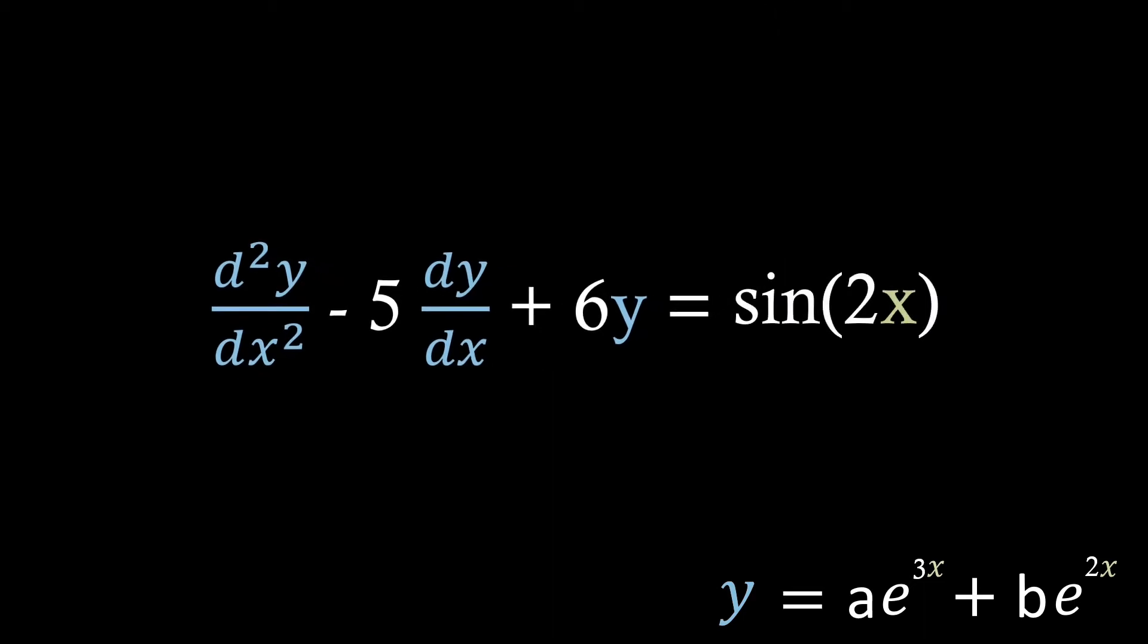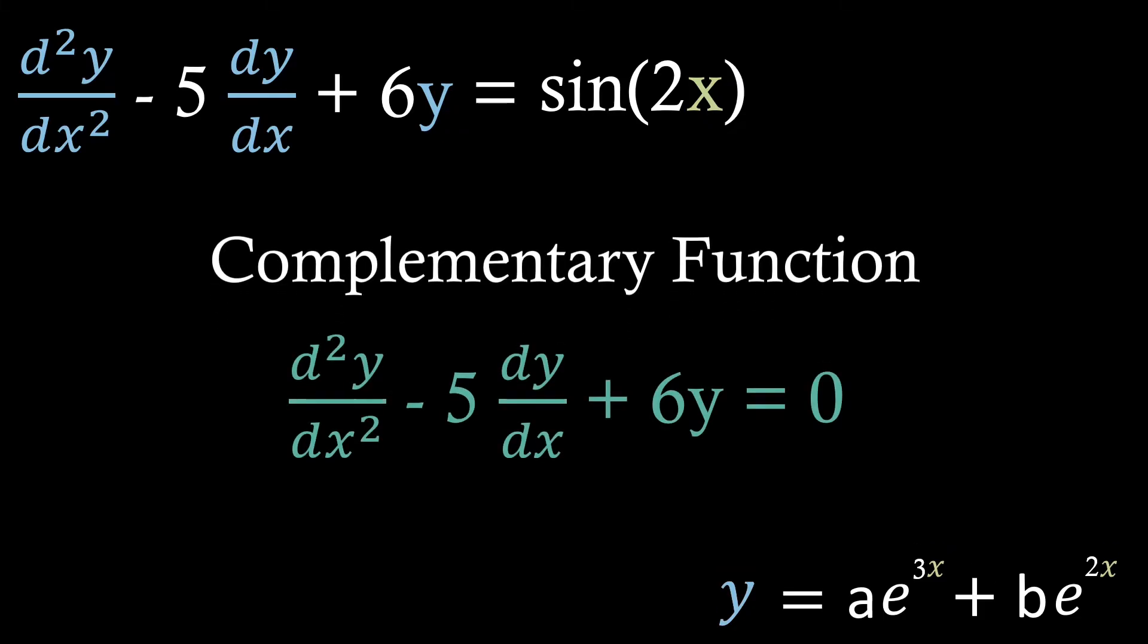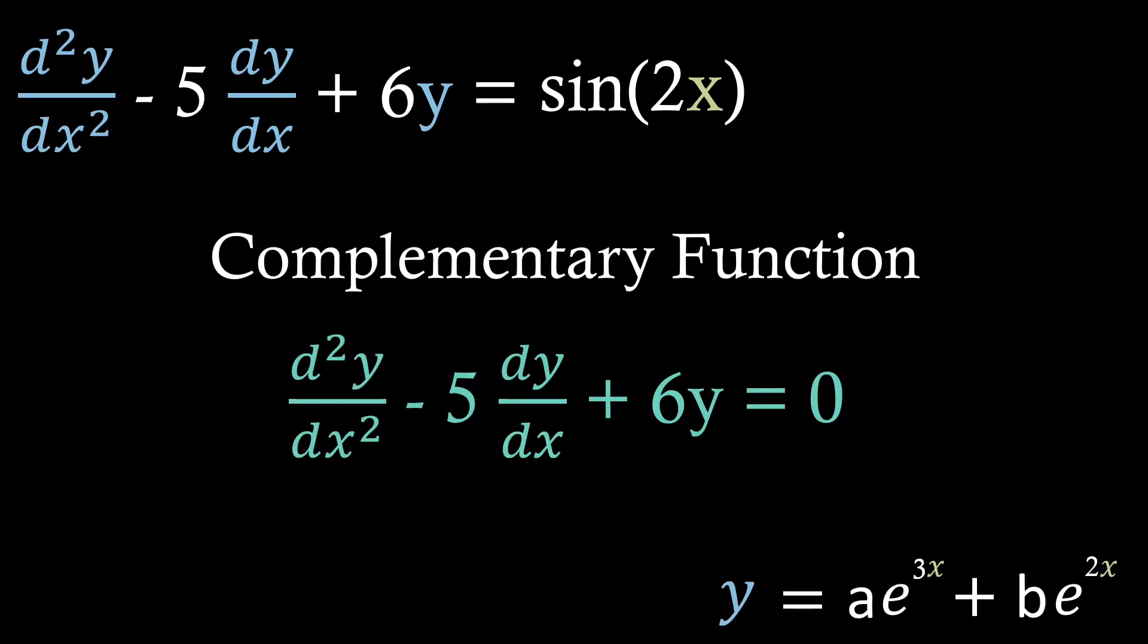We solve this by something called the complementary function and particular integral method. It involves two parts, so we'll start on the complementary function part. For this, we just set the right hand side to zero to make it a homogeneous case. And then we solve as we did before, using the auxiliary equation method.